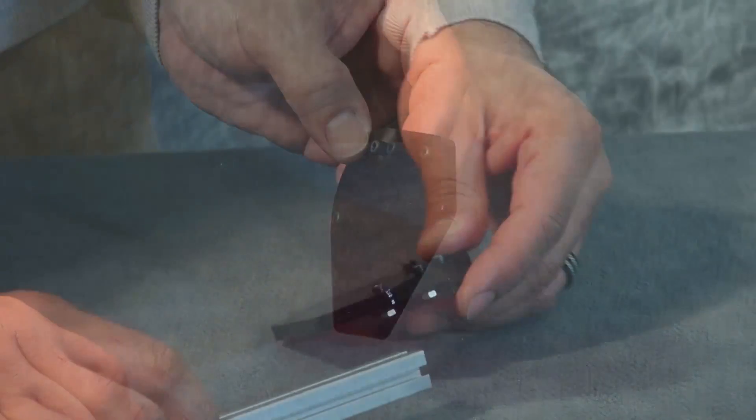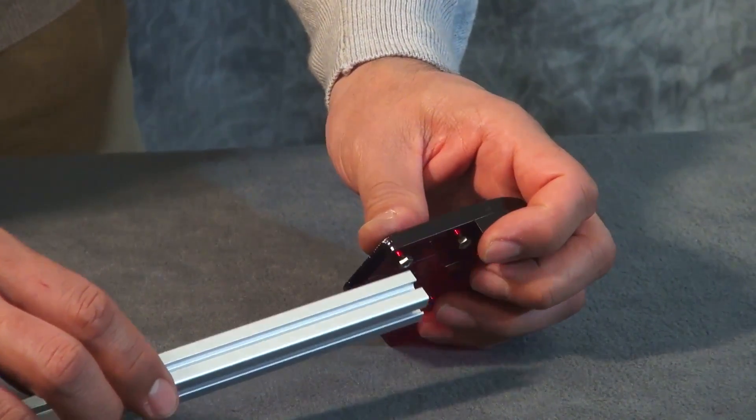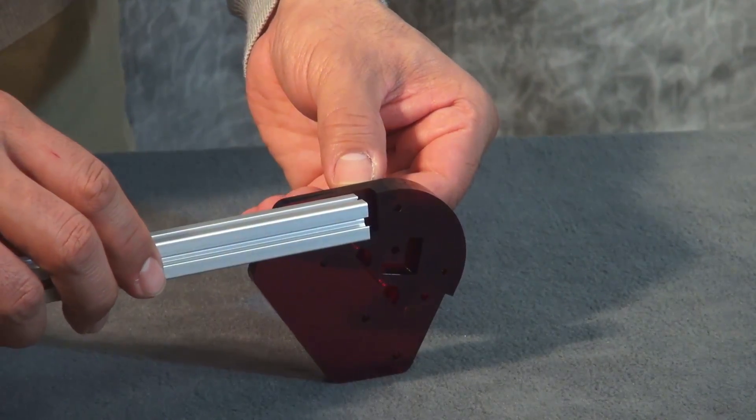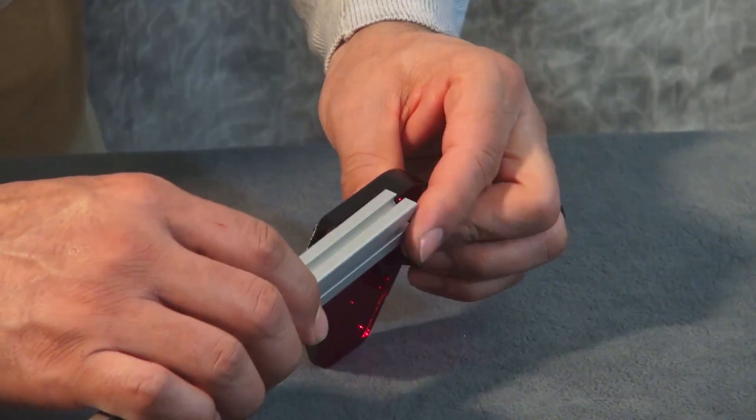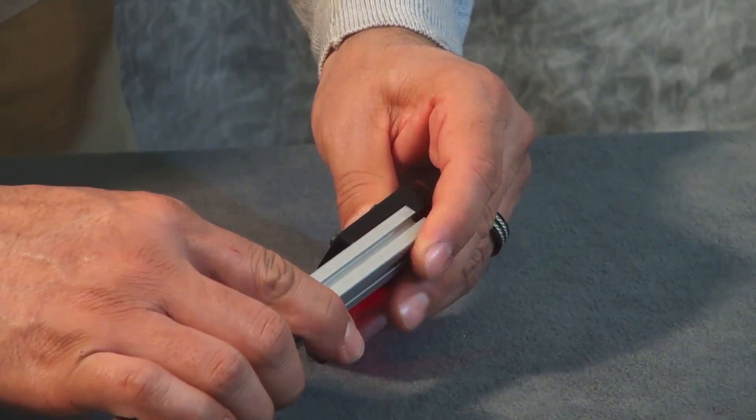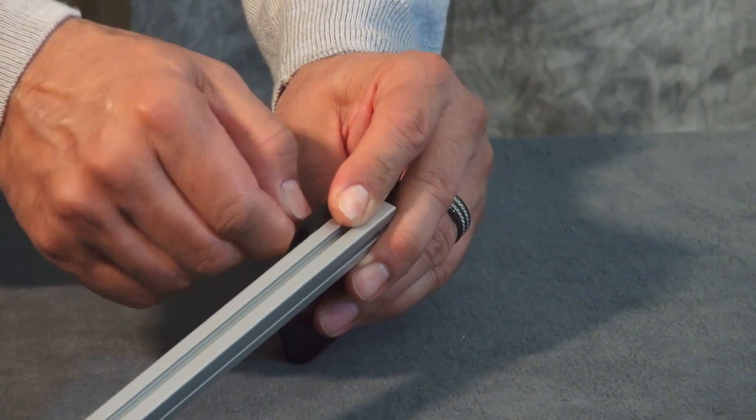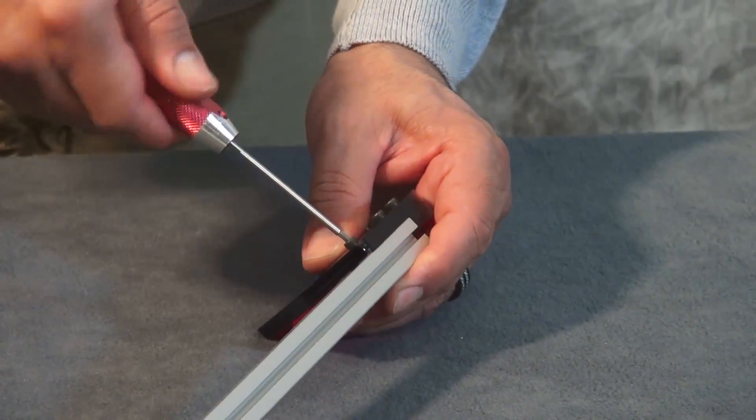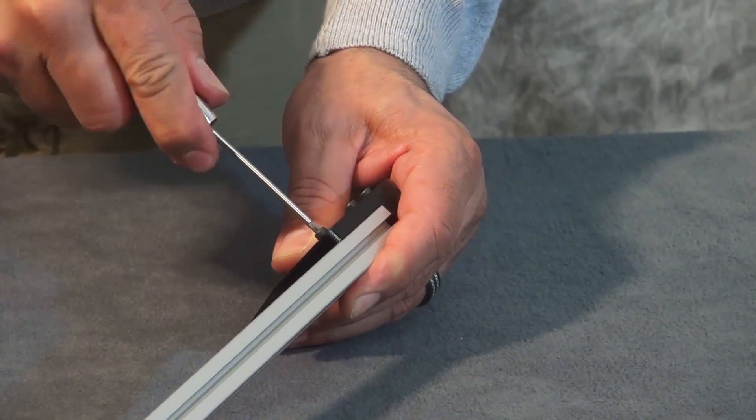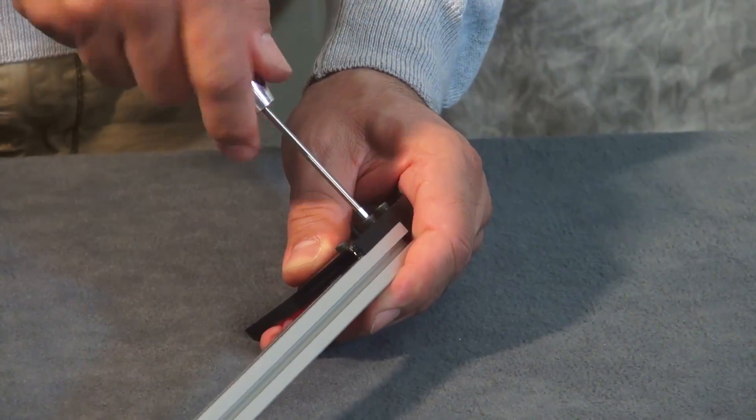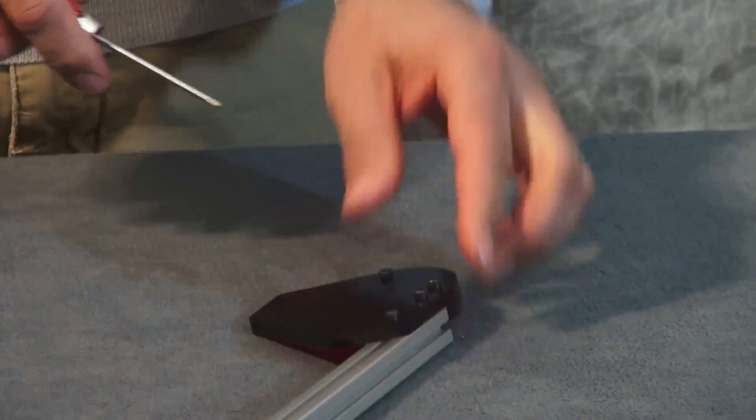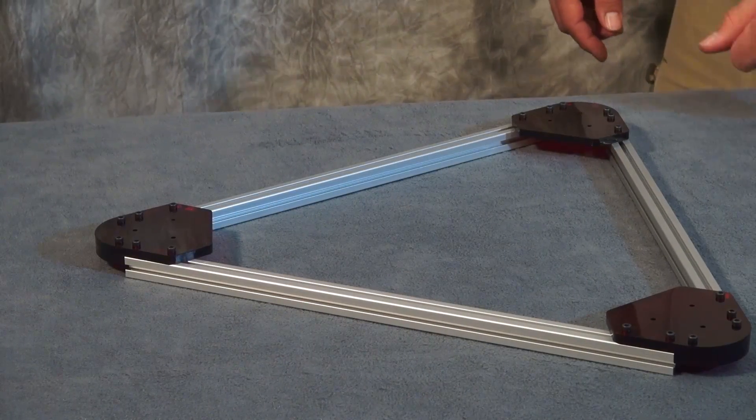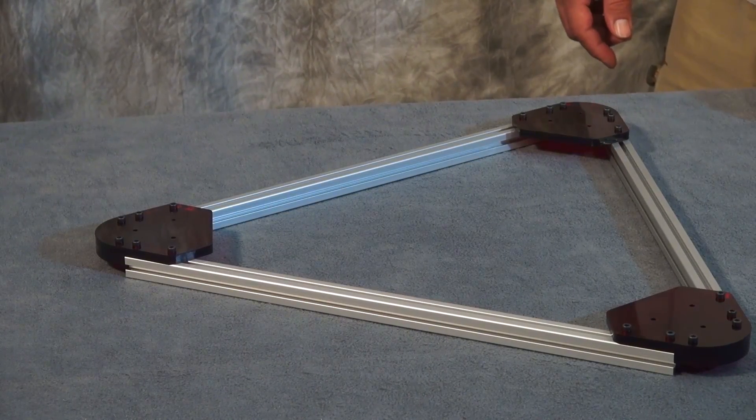Make sure there's no gap, line it up, and hand tighten them on. Then tighten them the rest of the way. Repeat this with the remaining crossbars and corner pieces. Now your top bracket is complete and ready to be mounted.